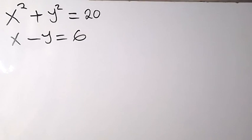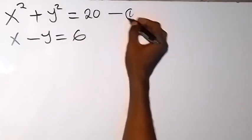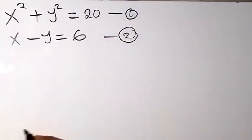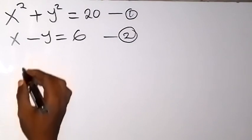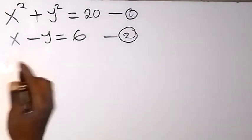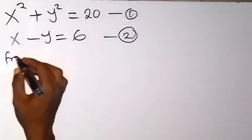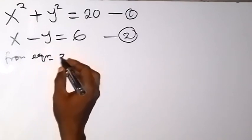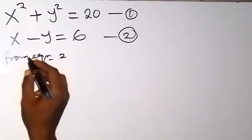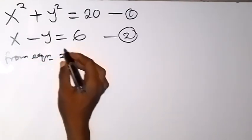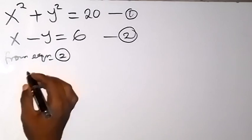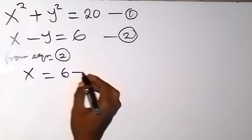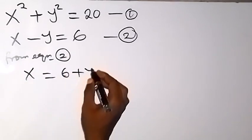From here, let's label this as equation 1 and this as equation 2. We can work from equation 2 — let's make x the subject. From there, we have x will be equal to 6 plus y.